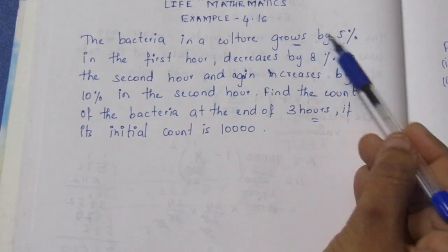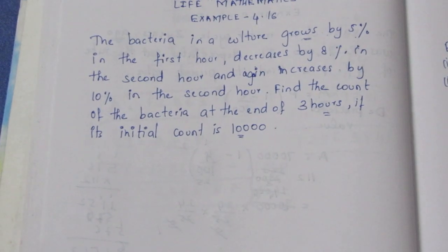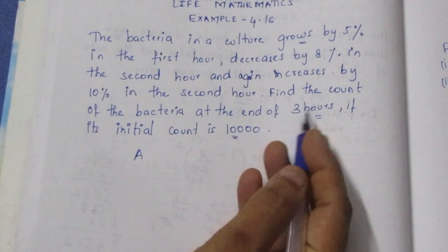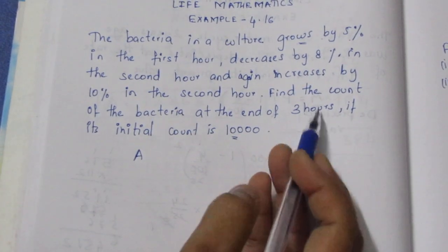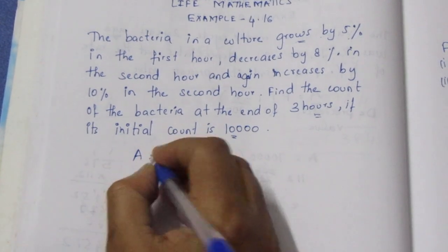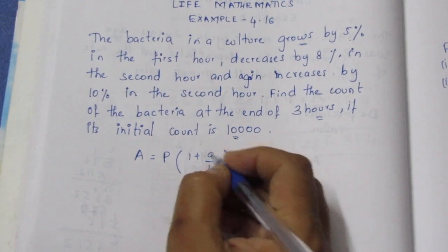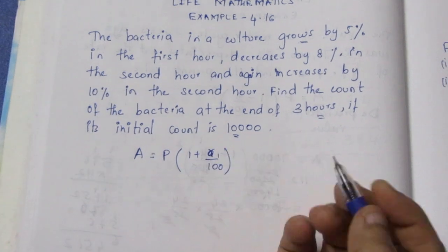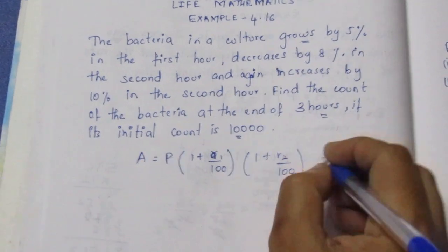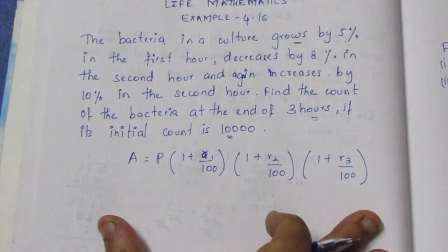Find the count of bacteria after 3 hours, if the initial count is 10,000. The formula to use is: initial count multiplied by (1 + R1/100) × (1 + R2/100) × (1 + R3/100), where R1, R2, R3 are the respective rates.